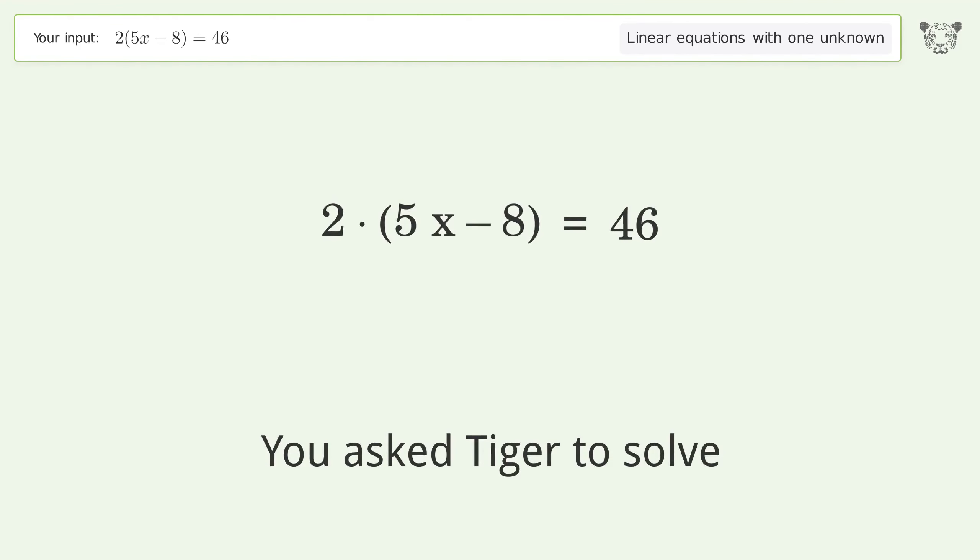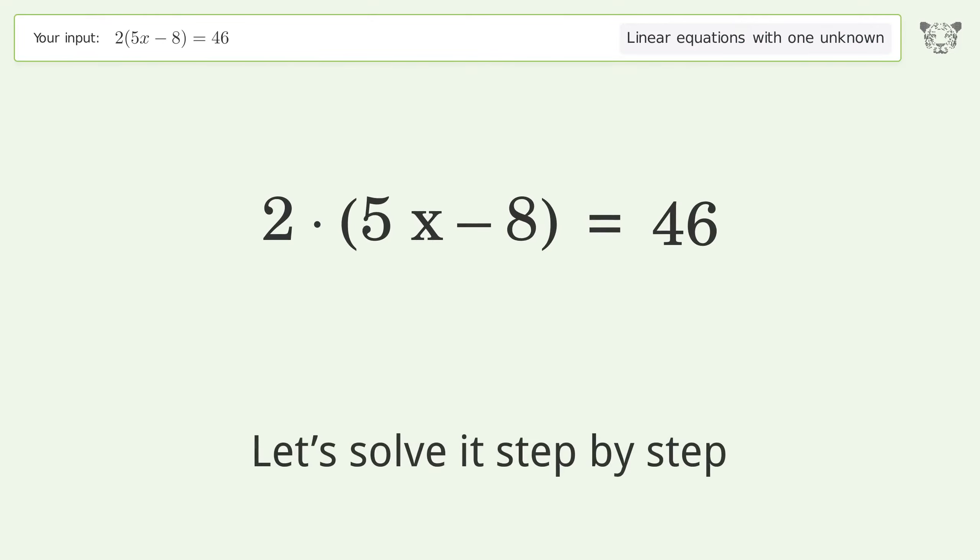You ask Tiger to solve this. This deals with linear equations with one unknown. The final result is x equals 31 over 5. Let's solve it step by step. Simplify the expression, expand the parentheses.